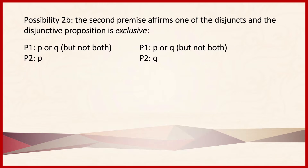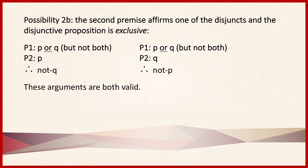Another possibility is that the second premise affirms one of the disjuncts and the disjunctive proposition is exclusive. To say a disjunctive proposition is exclusive is to say either P or Q is true, but they can't both be true. We underline the word OR to represent that it's exclusive. In the argument on the left, the second premise asserts P — if P is true and P and Q can't both be true, it follows that not Q. Similarly, in the argument on the right, the first premise asserts P or Q exclusively, and the second premise tells us Q is true, so it follows that not P.